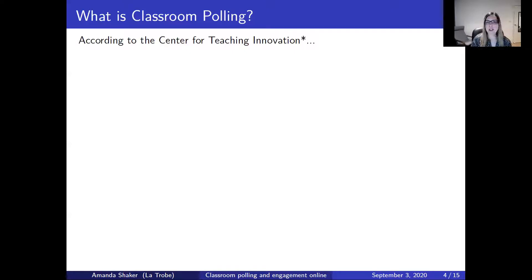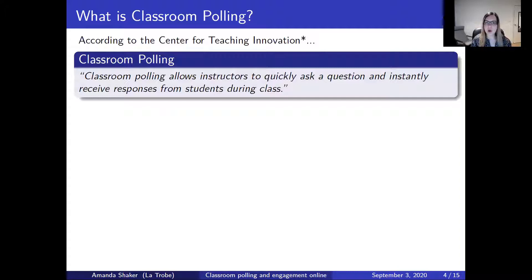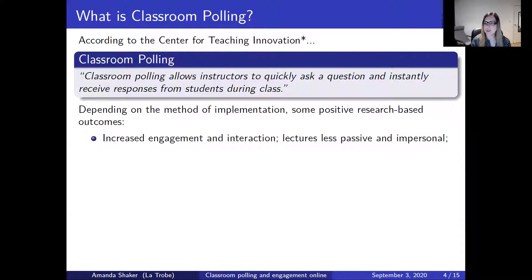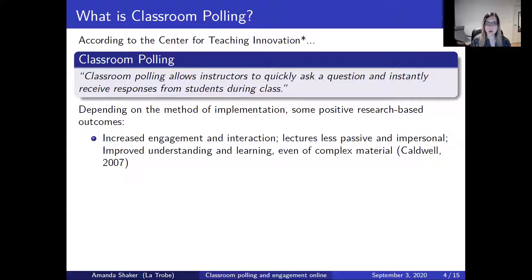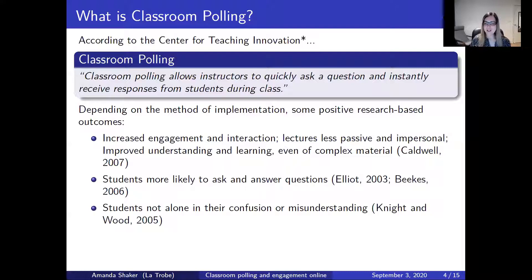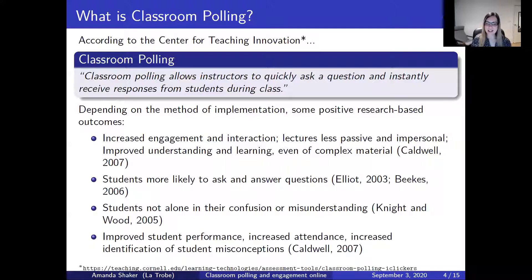We're probably all fairly familiar with what classroom polling is, so this background will be very short. Classroom polling allows instructors to quickly ask a question and instantly receive responses from students during class. Some of the positive, research-based outcomes include: increased engagement and interaction; lectures that are less passive and less impersonal; improved understanding and learning, even of complex material; students more likely to ask and answer questions; students not alone in their confusion or misunderstanding; improved student performance; increased attendance; and increased identification of student misconceptions. There's a lot of good reasons to do it.